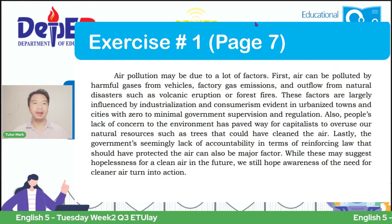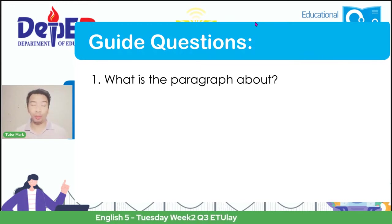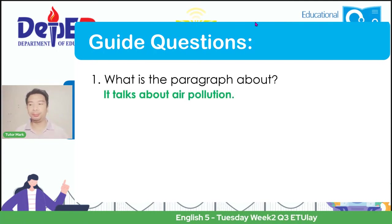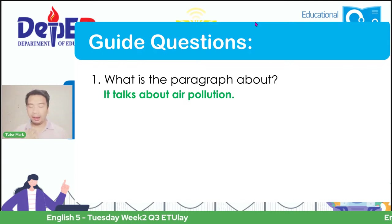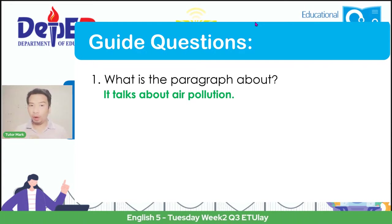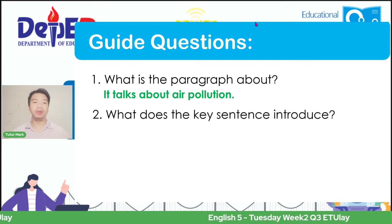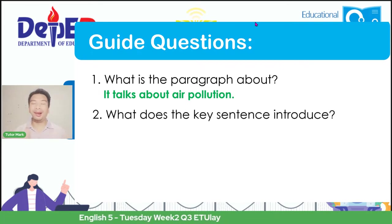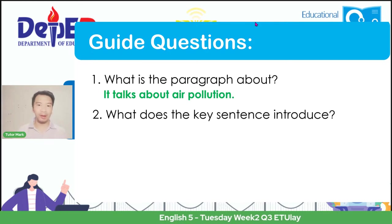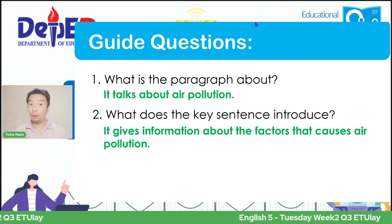In this text type, we can see that it gives different examples or reasons why we have air pollution and what its effects are. With this, we need to first have an idea or concept to answer the different guide questions to summarize it. These are the guide questions. What is the paragraph all about? What does it tell us about? If your answer is all about air pollution, then you are correct.